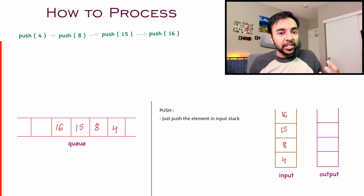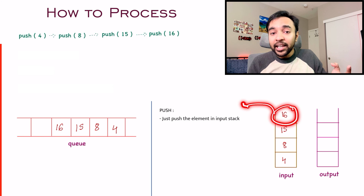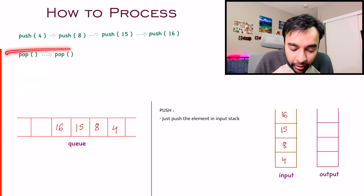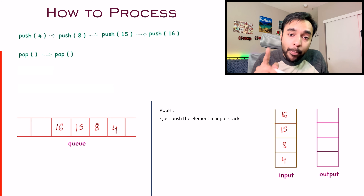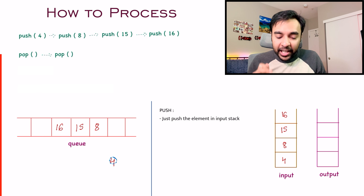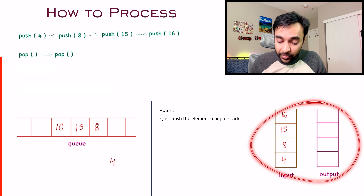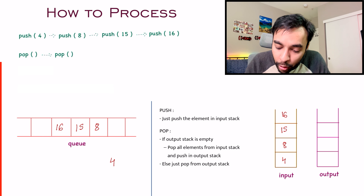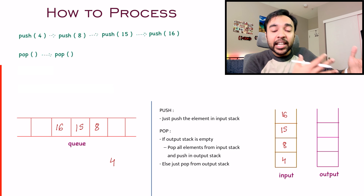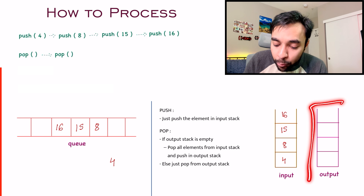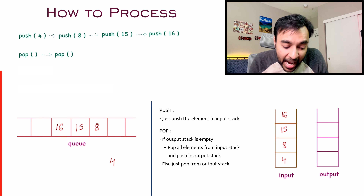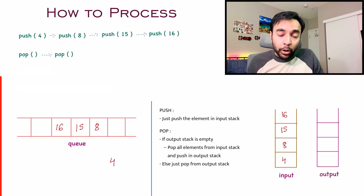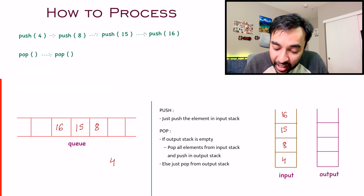Now we have two pop operations. If I call a pop on the input stack, 16 gets out — but that is not desired. According to a queue, 4 should come out. So there is a certain process — you have to look at your output stack. This will determine what elements should get out when you use the pop operation. Right now my output stack is completely empty. So if your output stack is empty and you get a pop operation, you need to empty your entire input stack and put it in your output stack — popping one element at a time from your input stack and putting it in your output stack.